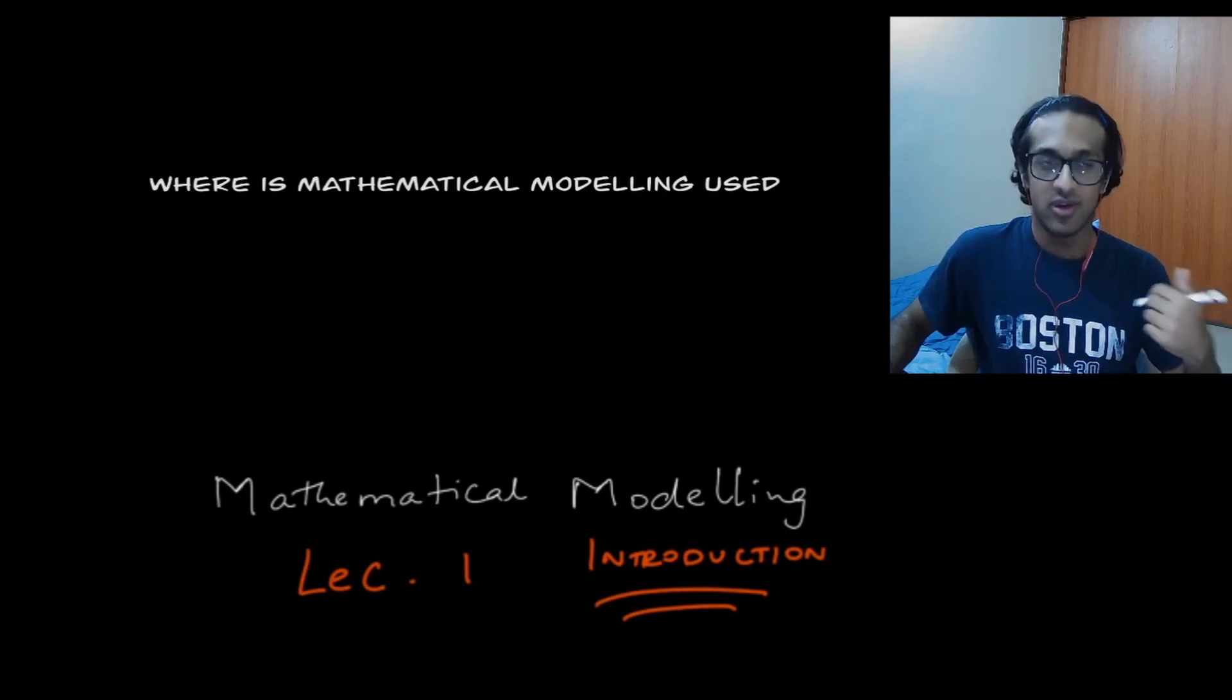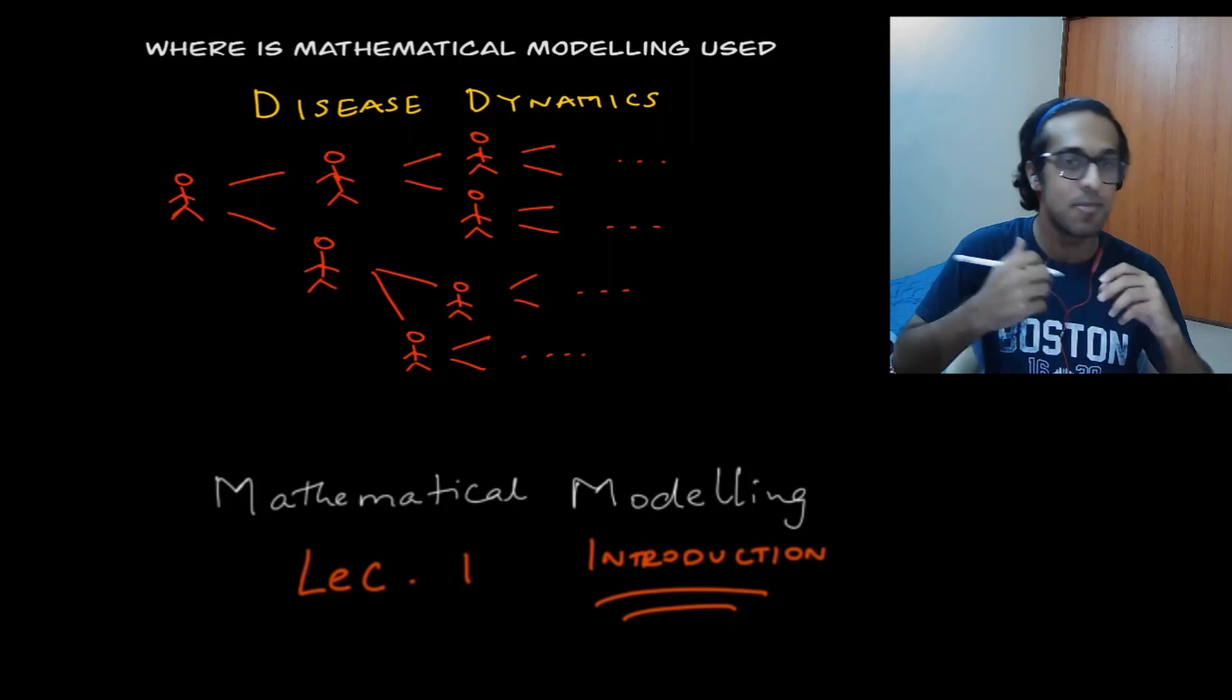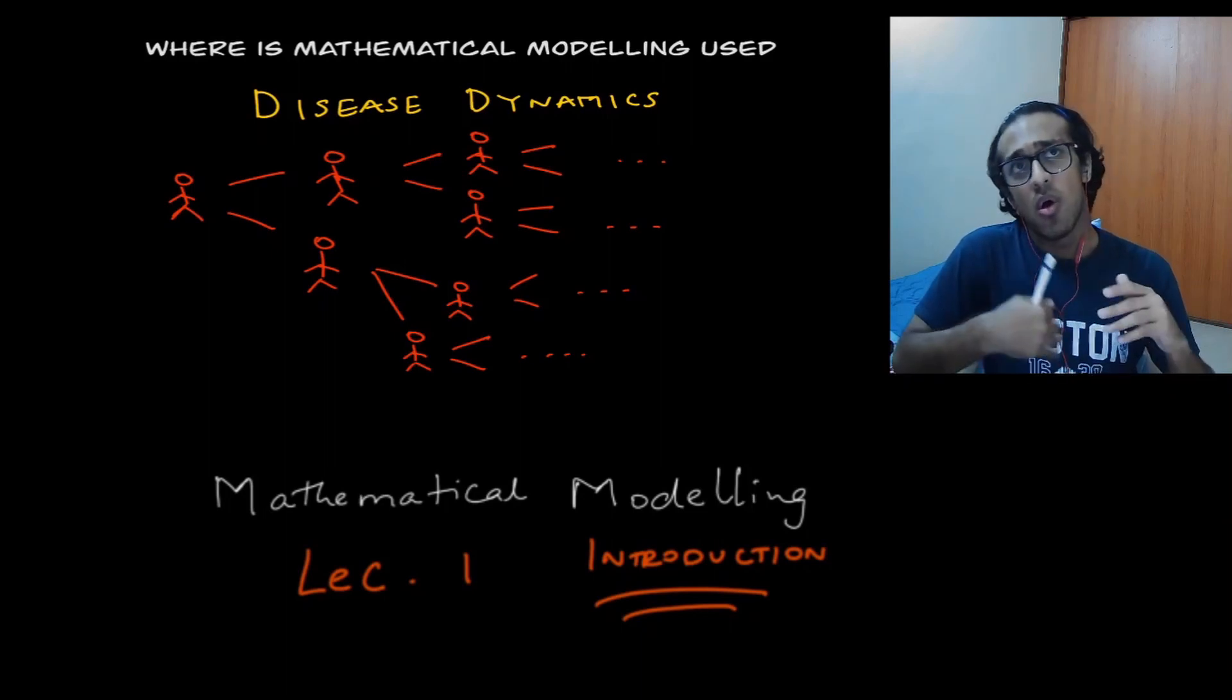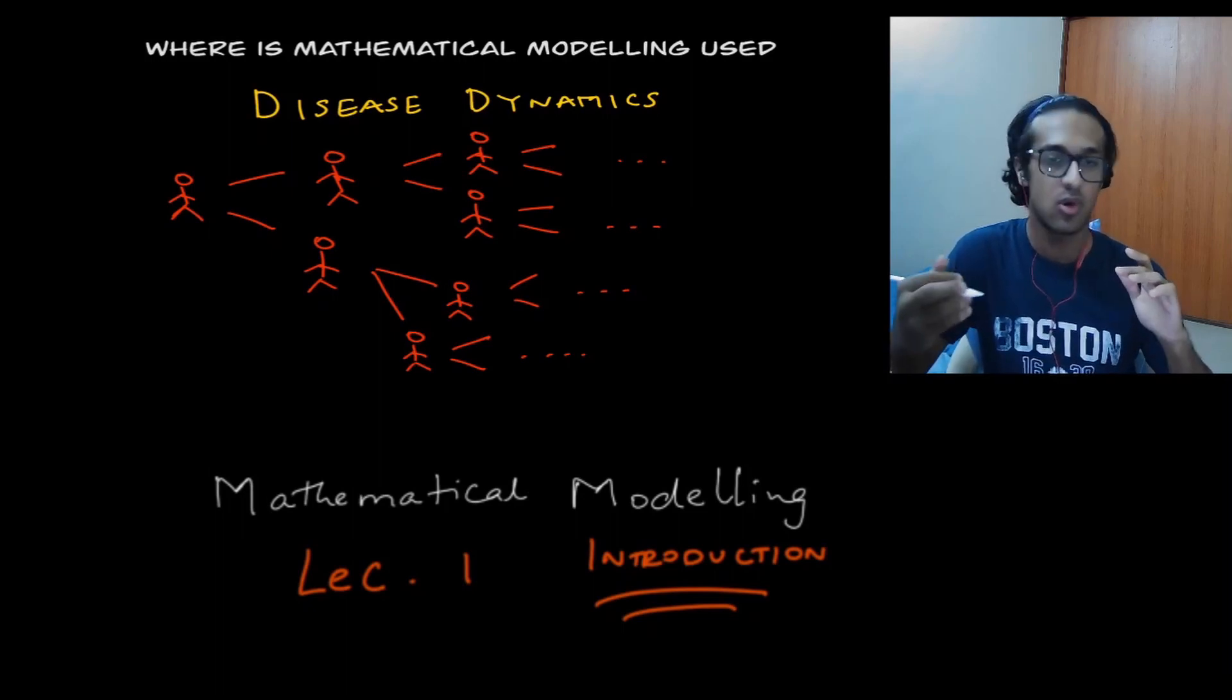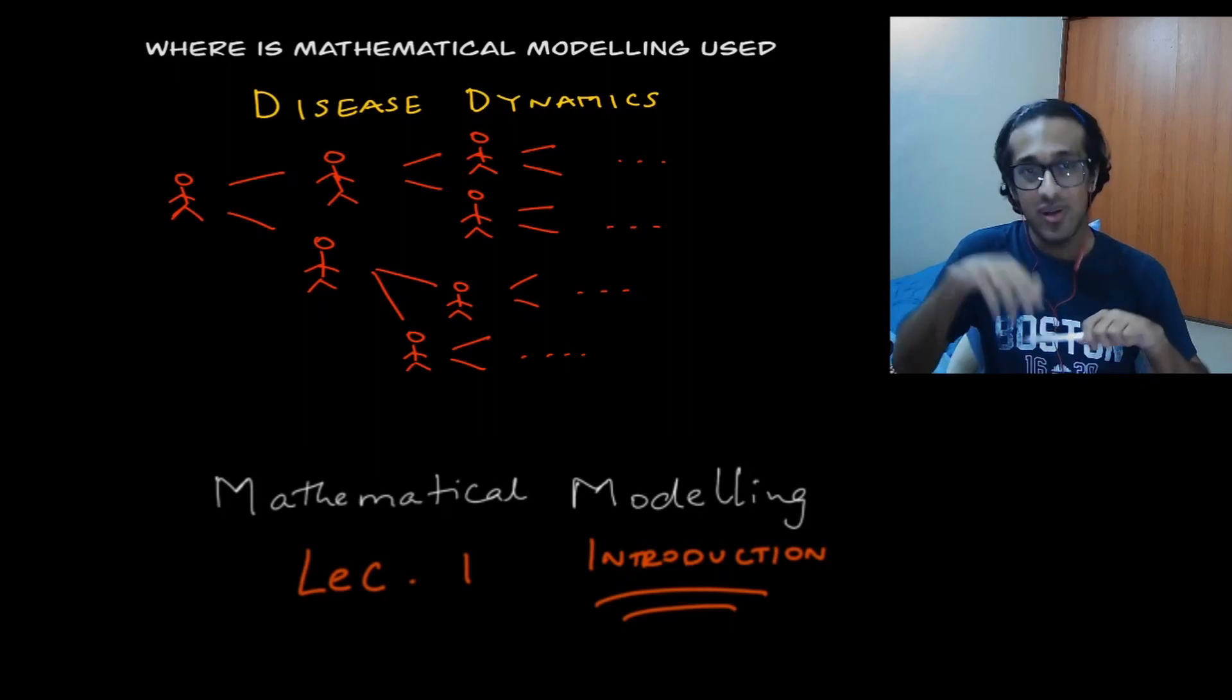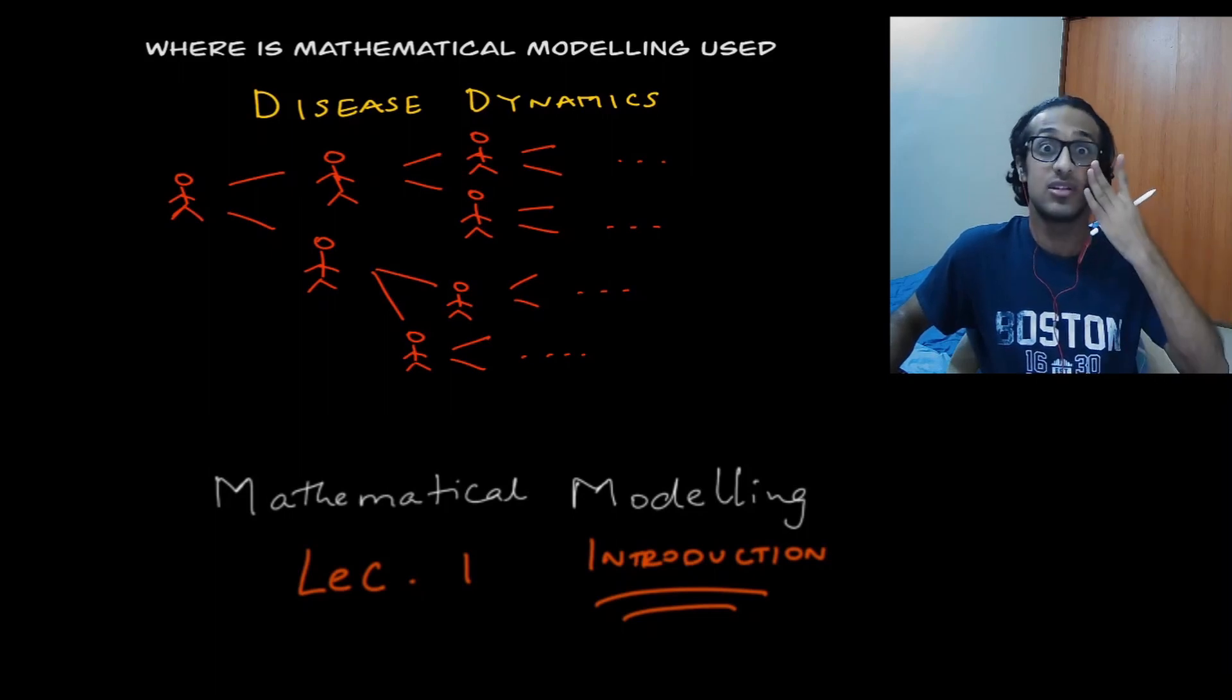Your next question might obviously be, where is mathematical modeling used in today's world? So it'd be pretty interesting for you to know that the biggest use of mathematical modeling is disease dynamics. And you're obviously seeing that with the ongoing pandemic. So we've been told things like every infected person gives rise to two new infections, and so on. And that's exactly what I've drawn. And we will deal with disease dynamics in detail in this video series, because that's something that I've researched the most.